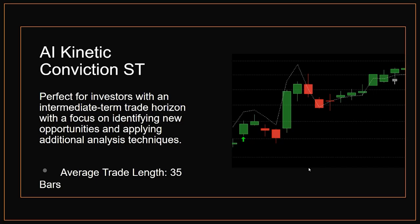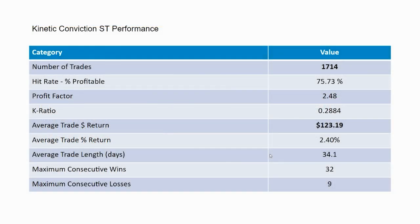In addition, there's the AI Kinetic Conviction ST, which is perfect for investors who have an intermediate-term trading horizon and like to focus on identifying new opportunities and applying additional analysis techniques of their own. This one has an average trade length of about 35 bars — a shorter-term horizon than the long-term system. In back-testing, it has 1,714 trades, a hit rate of 75.73%, a profit factor of 2.48, and a K ratio of 0.2884.